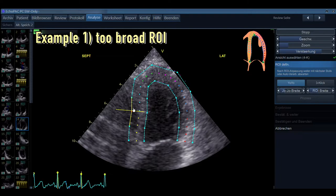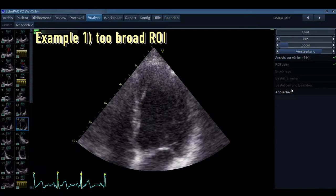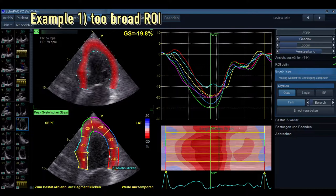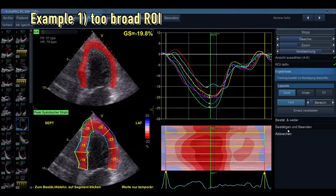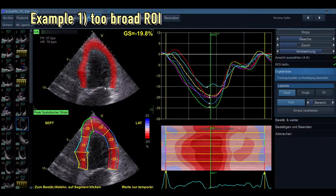So now let's do that and just exemplify how that would look like, how the tracing would look like. And of course, the tracing on the outer parts is different compared to the inner parts. So we are not in the myocardium anymore, but we are also tracing the surrounding tissues, which explains a lower value. In this case, we do not want to do that. Even though the curves are quite nice, we know from the B-mode image that this cannot be a good view.